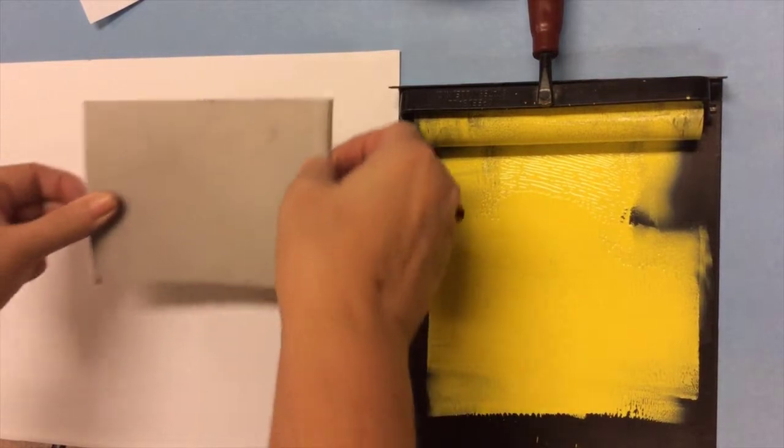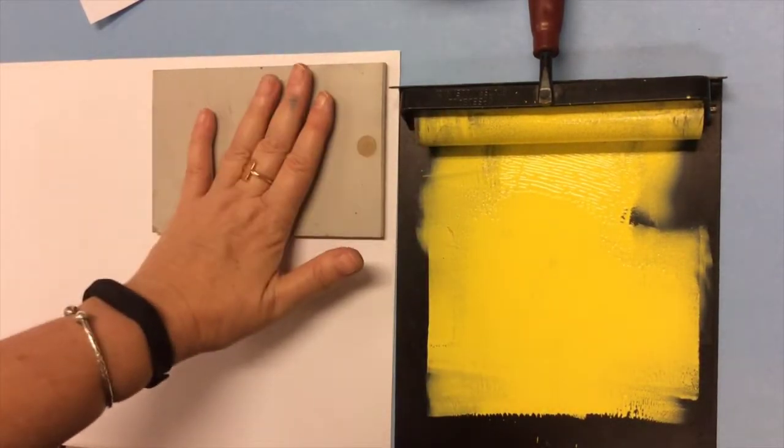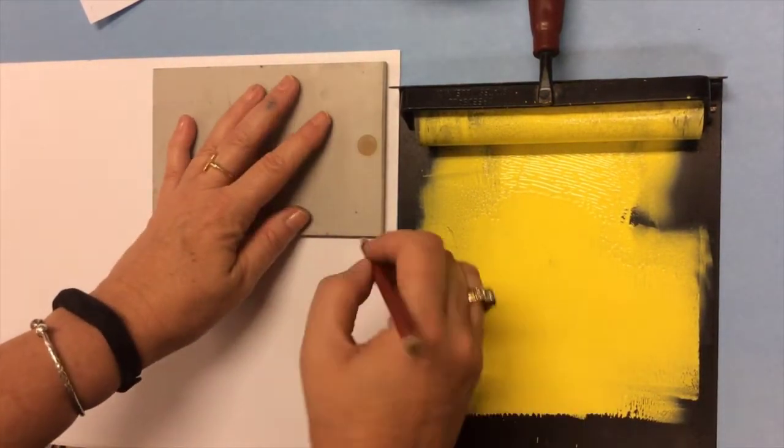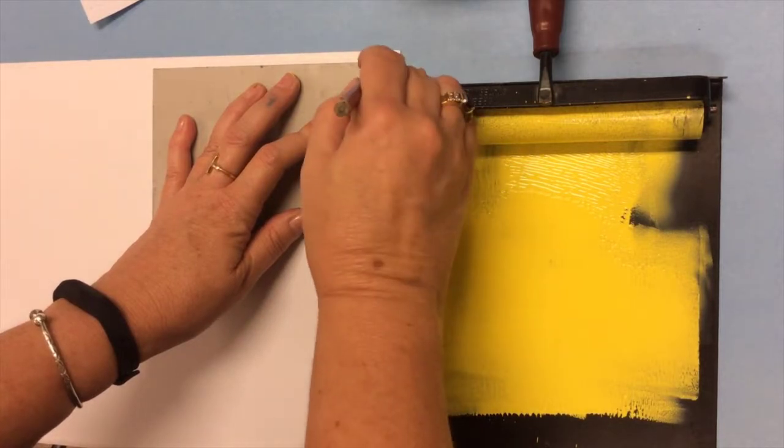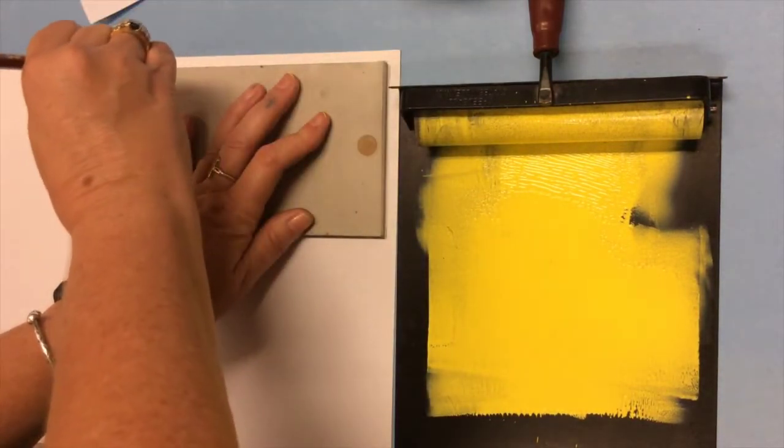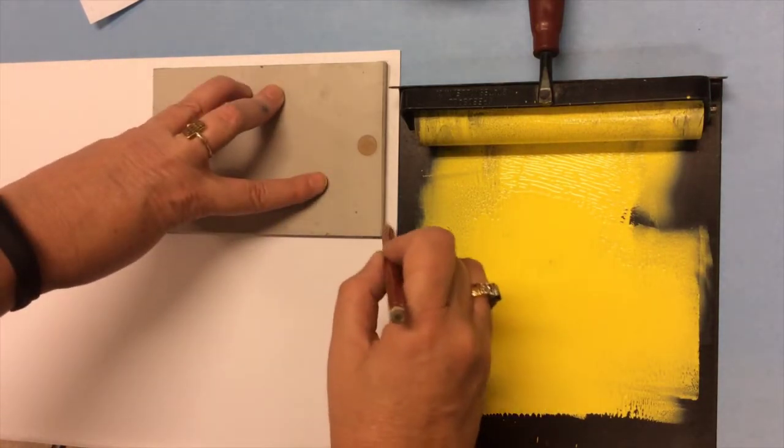Okay now that we've got the ink on our printing block we are going to make a print. So gently place it on your paper. Once you've done that you're going to take a pencil and mark the corners. This way when we go to print the other colors on top you'll be able to see where to line the block up so that you've got a nice clear print with the three different colors.